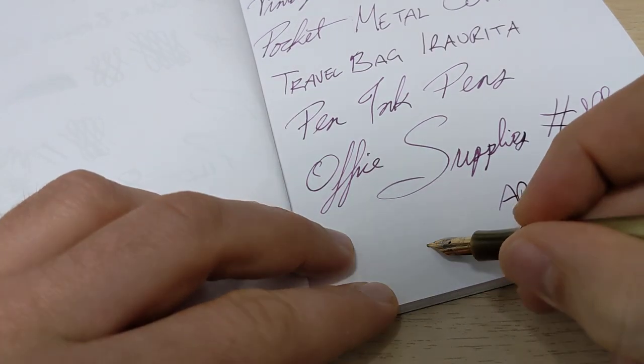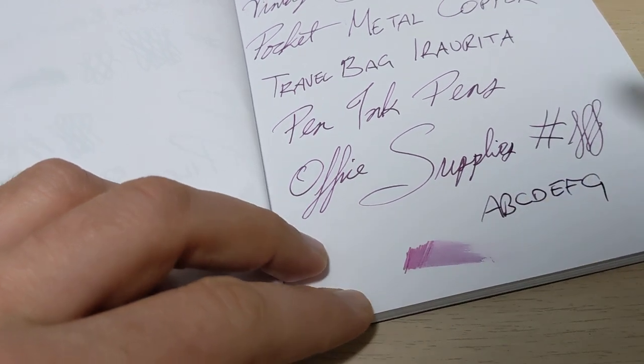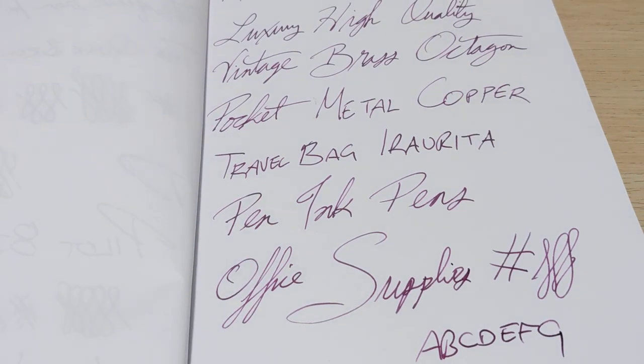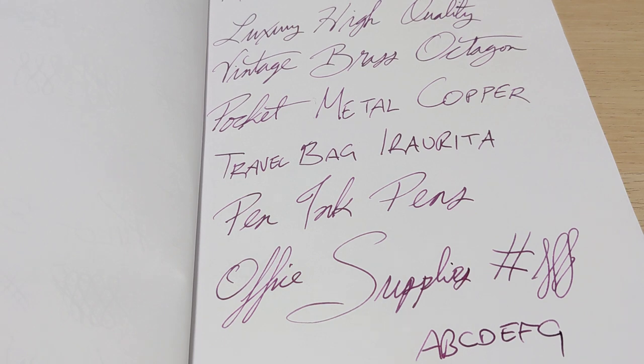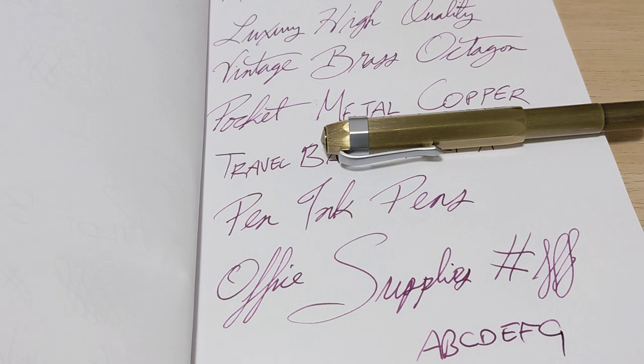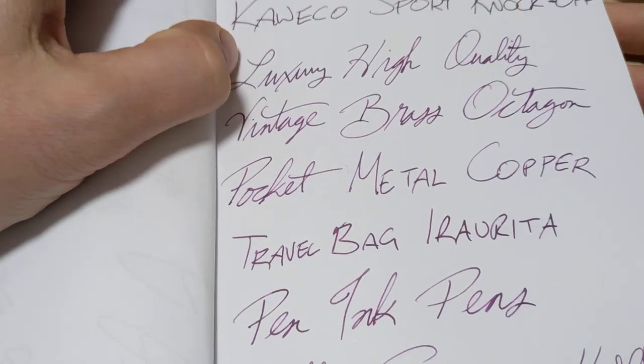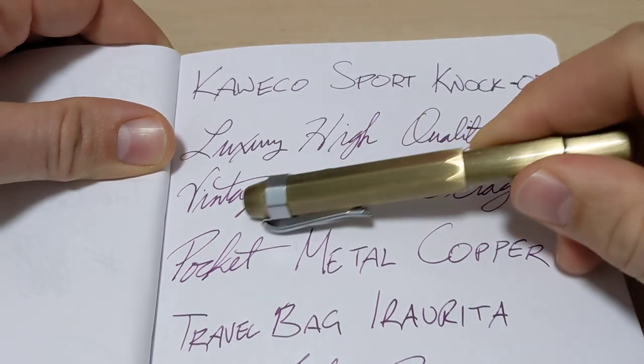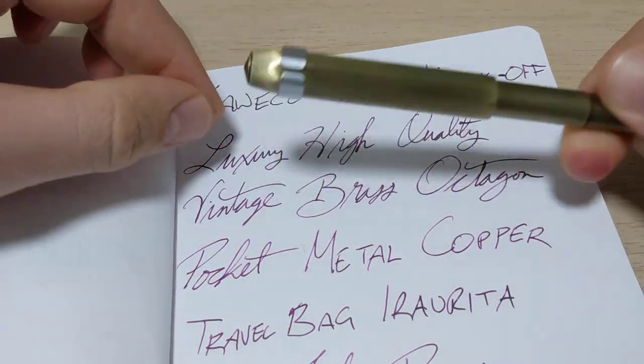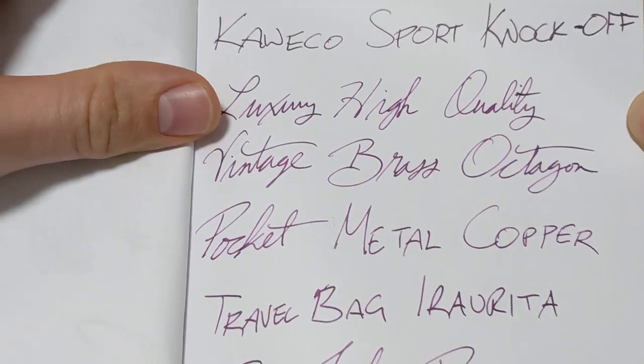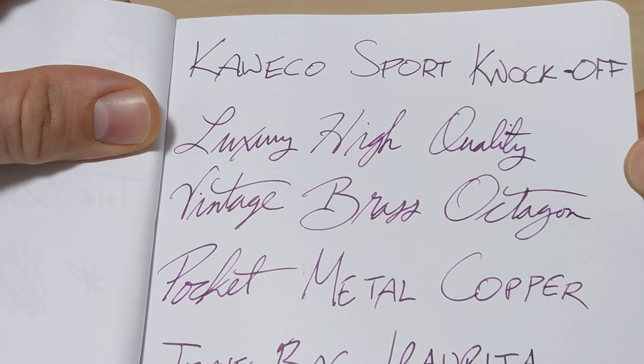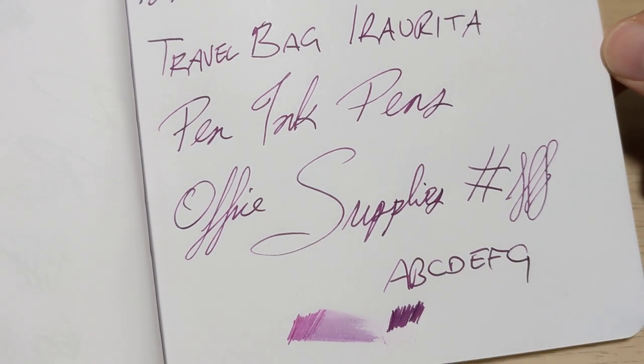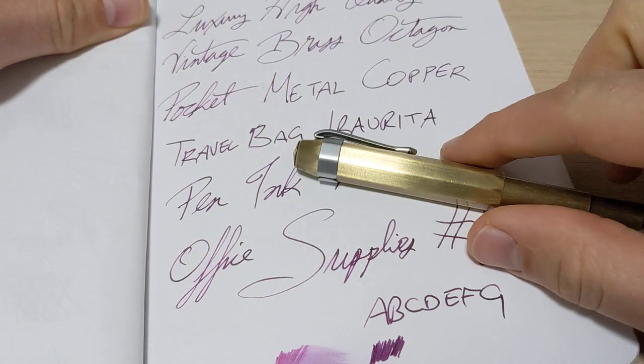I mean, it writes reasonably smooth. Decent wetness. What more could you want for three bucks? It's so cheap I bought one for a friend. Shout out to Al if you're watching this. So yeah, that's that. Pick one up. They've got different colors. There's even like this cool aqua green sort of color. Actually, I might buy it just for the color. And this is a pen if someone's like, oh, that's a cool pen. Maybe they're a client or something like that. I'd be like, you like it? Here, it's yours. Three bucks. I really don't care. I'll order more. But yes, so the Kaweco knockoff, the sport knockoff, is also known as a luxury high quality vintage brass octagon pocket metal copper travel bag Erosha pen ink pens office supplies. Hope you enjoyed. Have a good one.